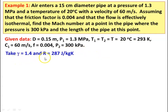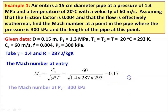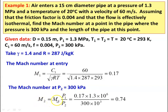We take gamma equal to 1.4 and R equal to 287 joules per kilogram Kelvin. The Mach number at the entry: M1 = C1 divided by square root of gamma R T1 = 60 divided by square root of 1.4 × 287 × 293 = 0.17. The Mach number at pressure P2 = 300 kilo Pascal: M2 = M1 × P1/P2 = 0.17 × (1.3 × 10⁶)/(300 × 10³) = 0.74.